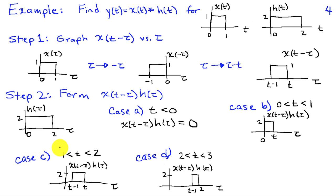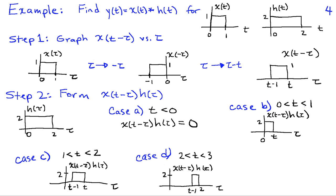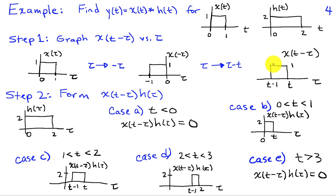If I increase t further, once t gets bigger than 2, then the right edge of x(t − τ) is to the right of 2. That edge now defines where the function goes to zero, and the left edge of x(t − τ) in this interval defines where it goes to zero as well. So now I have the product equal to 2 between t − 1 and 2. The final case is when t is greater than 3, because then the rightmost edge will be to the right of this edge and the product is again 0. So we've found the product x(t − τ) · h(τ) and listed it in several cases.